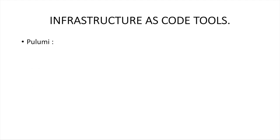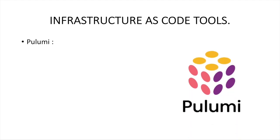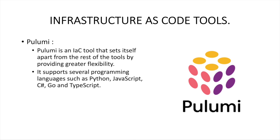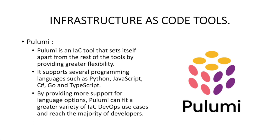The next tool is Pulumi. Pulumi is a very good tool if you are a developer. For example, if you already know Java, Python, or .NET, you can make use of Pulumi where you use those programming languages to set up your infrastructure using code. It supports a variety of programming languages — Python, JavaScript, C#, Go, TypeScript — so you don't have to learn a new language. You can use your existing knowledge to automate your infrastructure, making this tool a great fit for DevOps use cases.